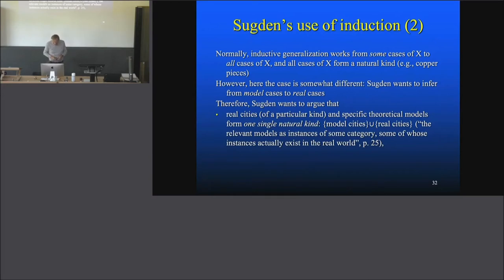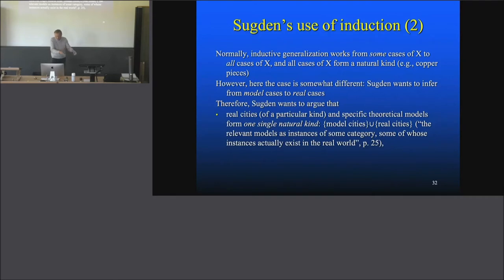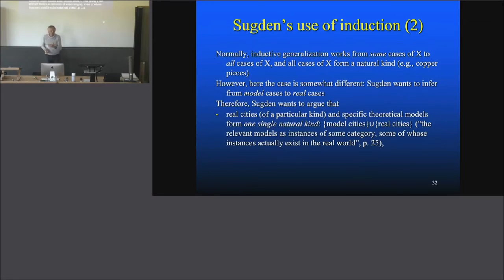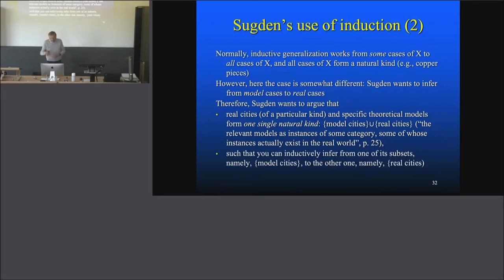He says the relevant models are instances of some category, some of whose instances actually exist in the real world. What he says here is that the same category is another term for the same natural kind. In his case, the relevant models are instances of the same category — namely these cities, models or real cities, with weak preferences that then lead to segregation. Some of those instances actually exist in the real world. I would much prefer he had said 'natural kind,' but otherwise his argument doesn't work. So he wants to inductively infer from one subset — namely the model cities — to the other, namely the real cities.